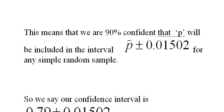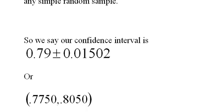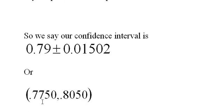So our confidence interval is 0.79, that's our sample proportion, plus or minus 0.01502, or 0.7750 comma 0.8050.